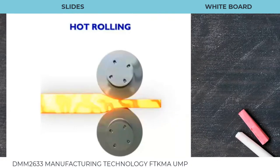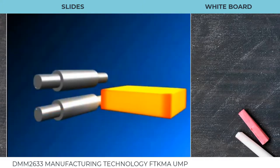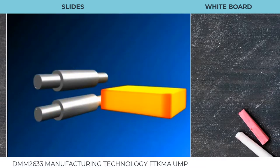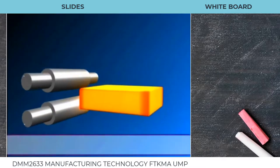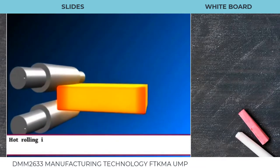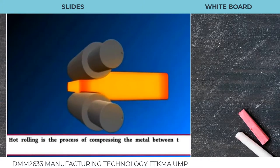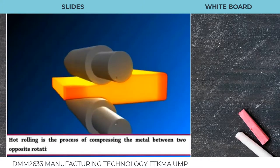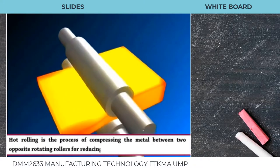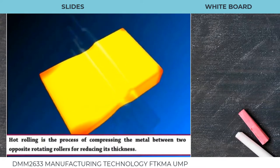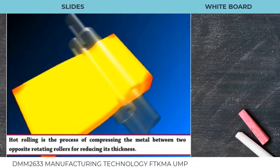Let us see an example of hot rolling. Hot rolling is a process of compressing the metal between two opposite rotating rollers for reducing its thickness.